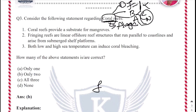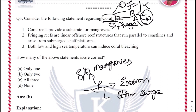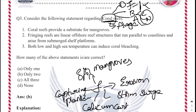Coral reefs are a natural protective barrier against erosion and storm surge. They also provide a substrate for mangroves. Another function is that they capture plankton from the water to obtain nutrition. Additionally, they are the largest producers of calcium carbonate. So these are the different functions of coral reefs.